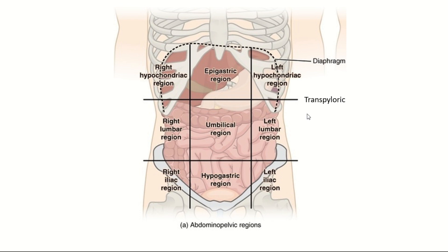So the transpyloric line is halfway from the suprasternal notch to the pubic symphysis. The horizontal line below is the trans-tubercular line, and since it cuts through the two iliac tubercles, hence the name trans-tubercular. Its position is between the transpyloric line and the pubic symphysis. These two horizontal lines and the two mid-clavicular lines divide the abdomen into nine regions.